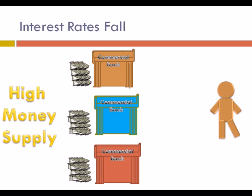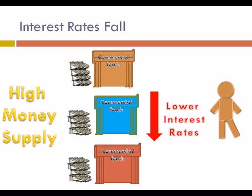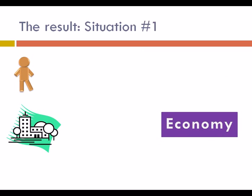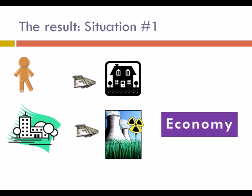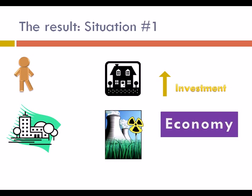When there is more money in the financial system, banks are more willing to lend, and this in effect lowers interest rates. Lower interest rates correspond to more borrowing. Households might be more inclined to borrow to buy a house, whereas firms are more likely to get the financing they need to build factories, design products, or pursue other long-term projects, increasing investment and helping boost economic growth.